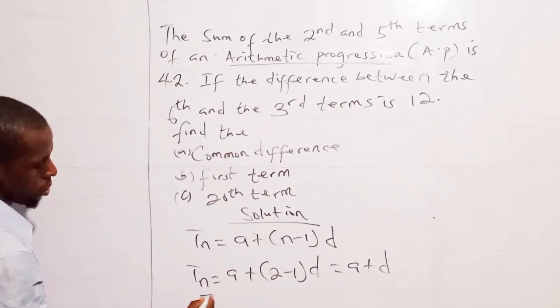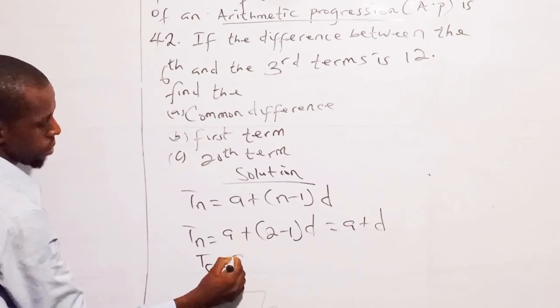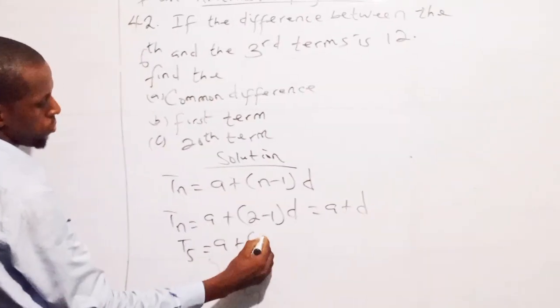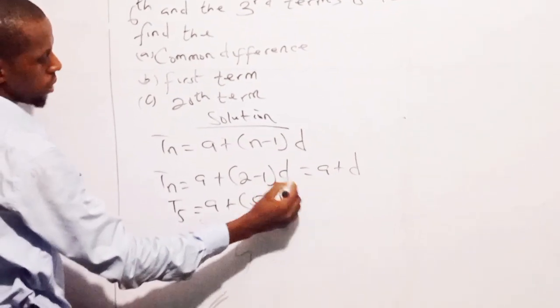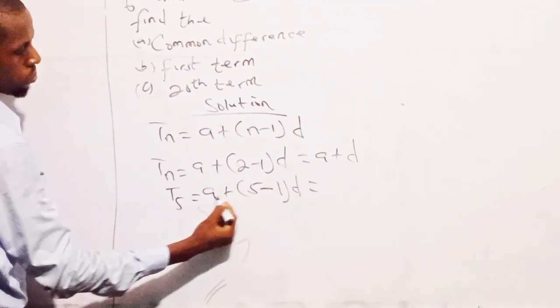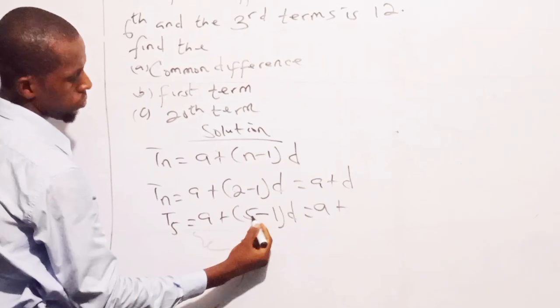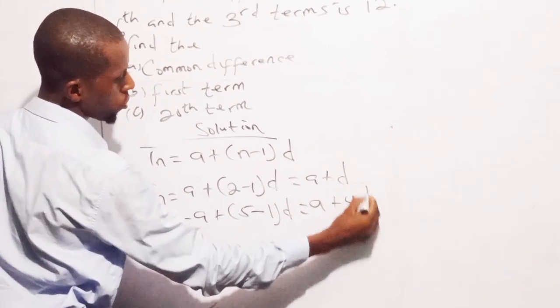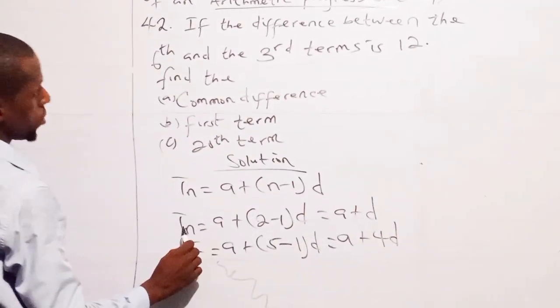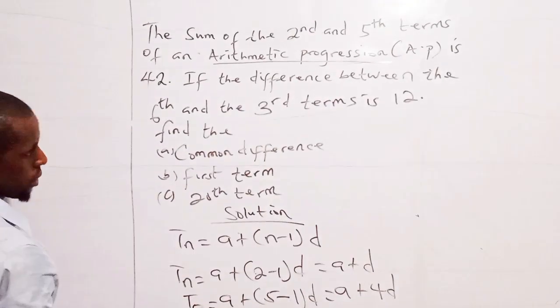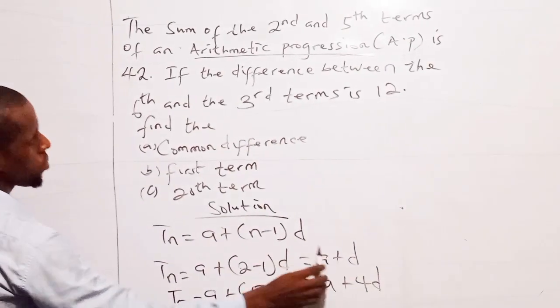Our fifth term of our AP. So I'm having A plus 5. I'll replace my N with 5 minus 1 times D. So that gives me A plus 4, 5 minus 1 is 4, 4D. Now, I've figured out the second term and the fifth term, and these are my results.